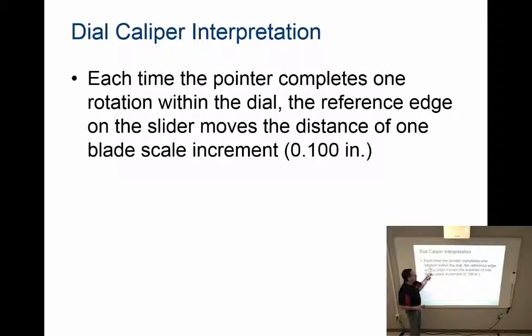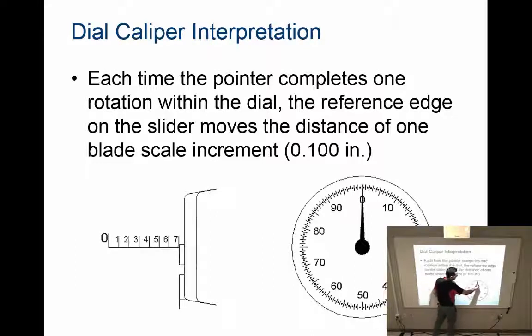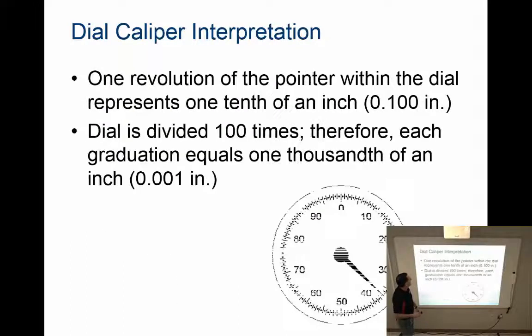Each time the pointer completes one rotation within the dial, the reference edge on the slider moves the distance of one blade scale increment, which is 0.1 inches. What that means is every time I rotate and make one complete rotation on the dial, it's the same as my reference edge moving from, let's say, the 6 to the 7, or six tenths of an inch. This dial divides this space into a hundred little points.